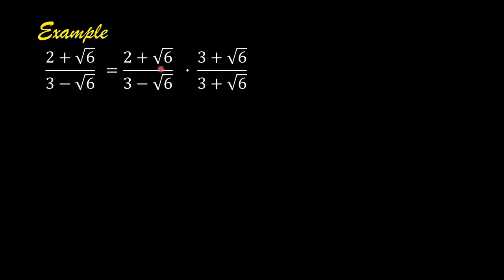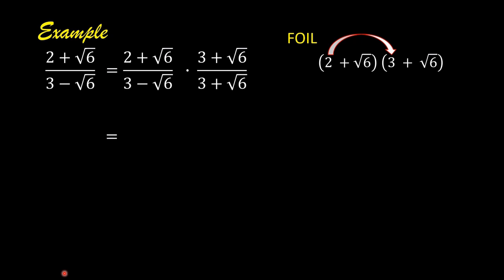So in the numerator: 2 plus square root of 6 times 3 plus square root of 6. We can use the FOIL method. First term times first term: 2 times 3 is 6. Then multiply the outside terms: 2 times positive square root of 6 gives positive 2 square root of 6.